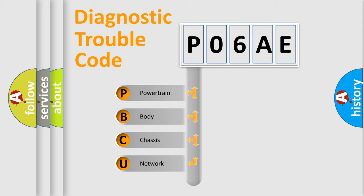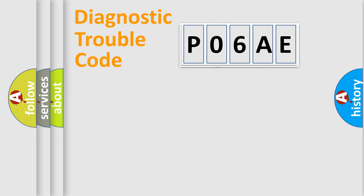We divide the electric system of automobiles into four basic units: Powertrain, Body, Chassis, and Network. This distribution is defined in the first character code.